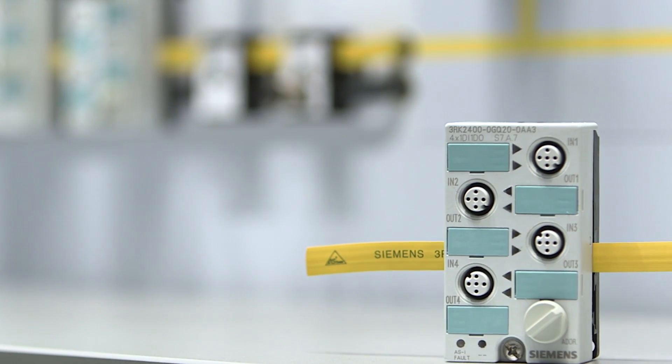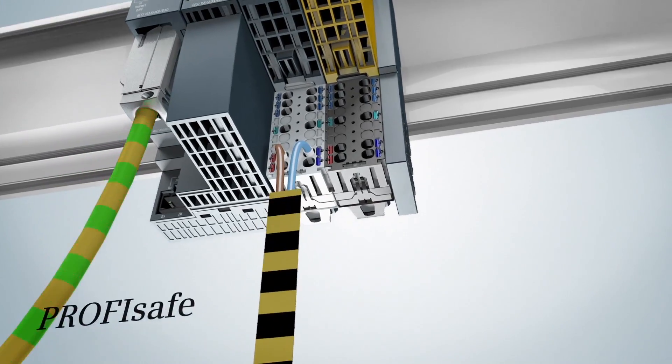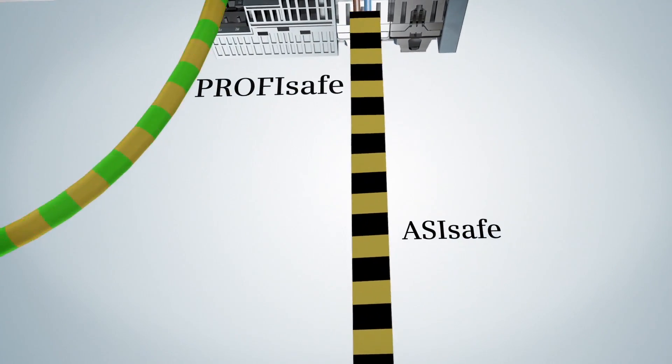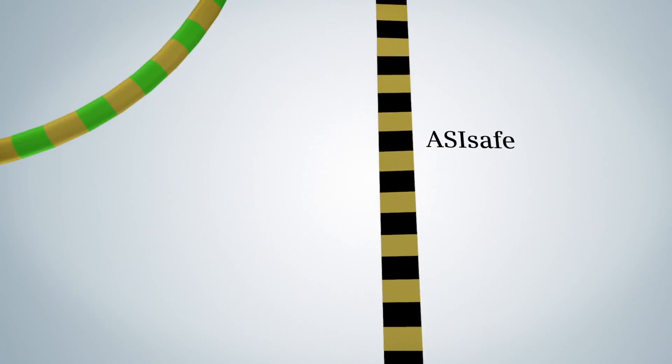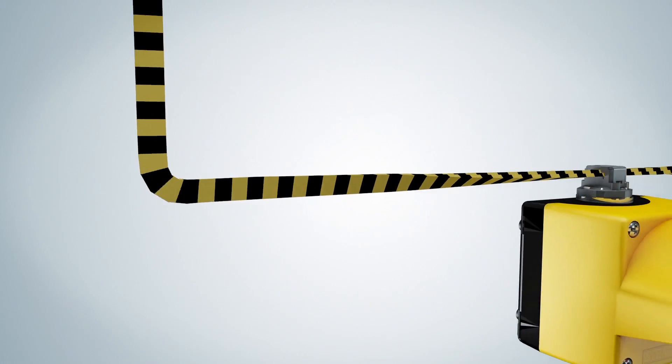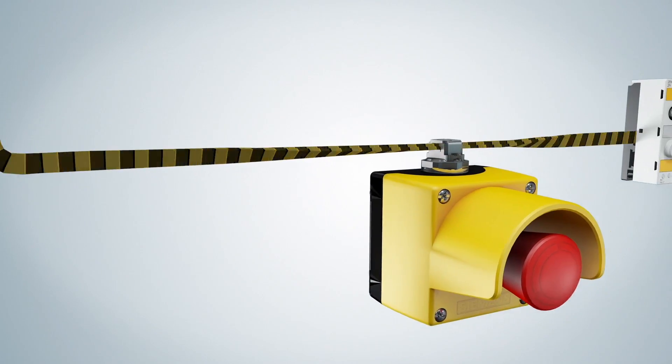What is AS interface? This field bus system is the easiest way to connect sensors and actuators in compact machines or large plants to the controller. AS interface, or ASI for short, uses as bus line a two-core flat cable, which you simply attach to the I/O modules in any position and directly into the machine. Short M12 cables are then sufficient for connecting to the sensors and actuators.